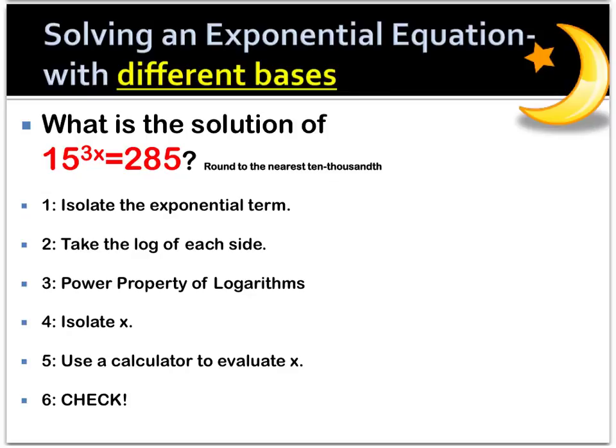So now let's try it out. I have 15^3x = 285. So the first thing you want to do is make sure your exponential term is completely isolated, which it is in this case. But if there was anything added or subtracted, you want to bring it over. Now we are just going to go ahead and take the log of each side. Because of our logarithmic properties, we can now get that x out of the exponent by bringing it to the front. So this guy is going to hop down.